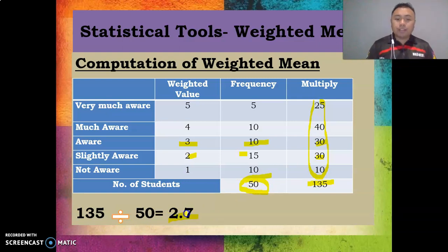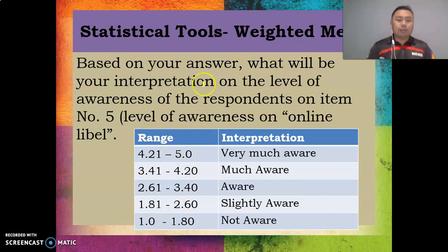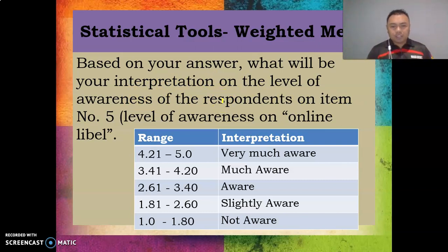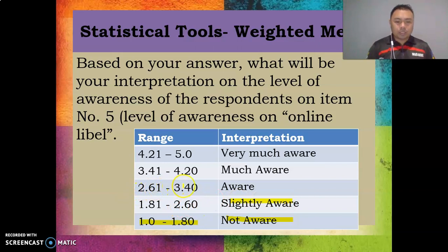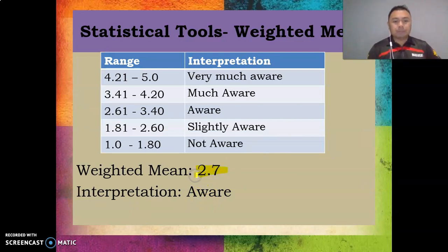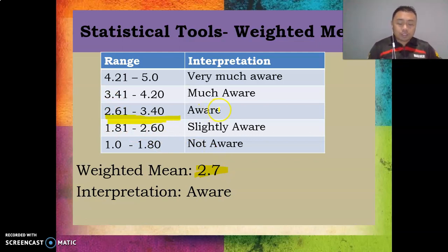The weighted mean is 2.7. Now, based on that answer, what is the interpretation for the level of awareness on item 5? The range is: 1.0–1.8 = Not Aware, 1.81–2.60 = Slightly Aware, 2.61–3.40 = Aware, 3.41–4.20 = Much Aware, 4.21–5.0 = Very Much Aware. Since 2.7 falls in the range 2.61–3.40, the interpretation is 'Aware.'